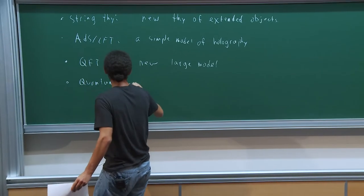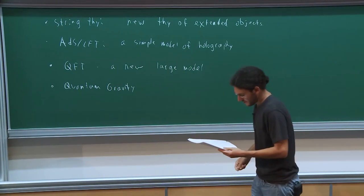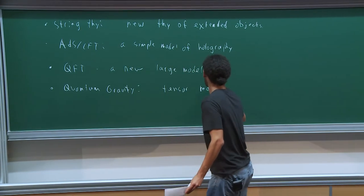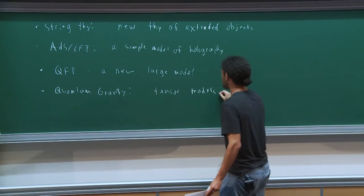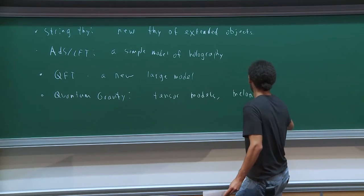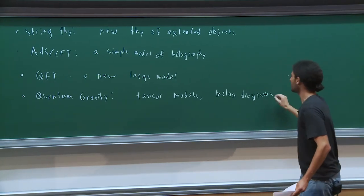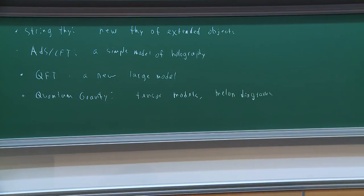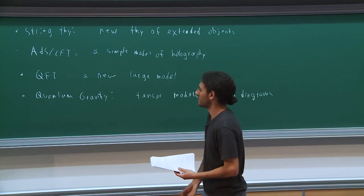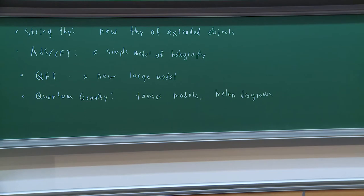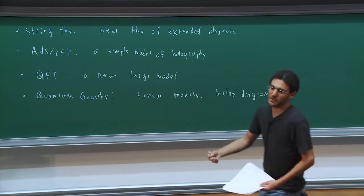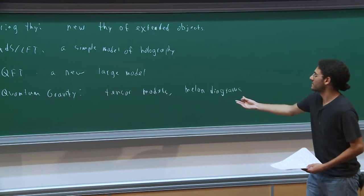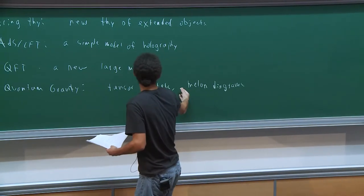This brings us to point number four: quantum gravity. Summing melon diagrams is something that some people have been doing for years before SYK in the context of tensor models. It's known that matrix models are discretizations of surfaces, from which you build geometry, and one could wonder if tensor models are the natural thing to build higher-dimensional geometry. Tensor models sum melons, which is what SYK is summing.